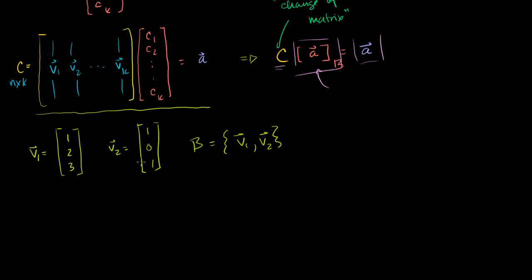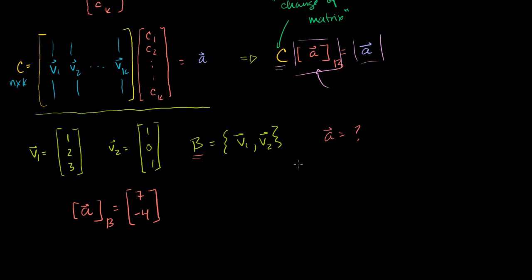Now let's say I know some vector that's in the span of these guys, and all I know is how it's represented in coordinates with respect to this basis. So let's say I have some vector a, and when I represent the coordinates of a with respect to this basis, it's equal to 7 and minus 4. So how can we represent this vector in standard coordinates? Well, you could just say a is equal to 7 times v1 minus 4 times v2, and you'd be completely correct.